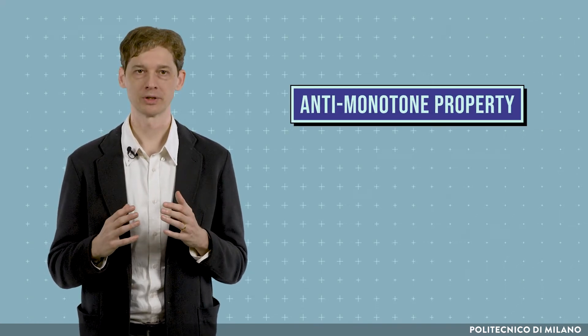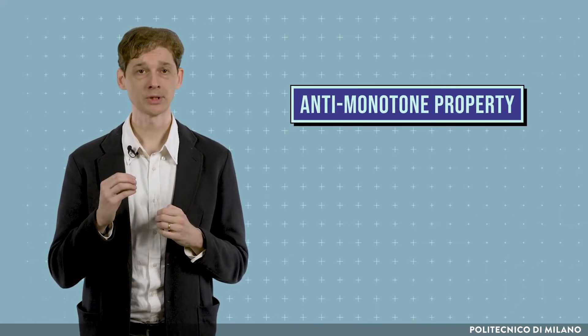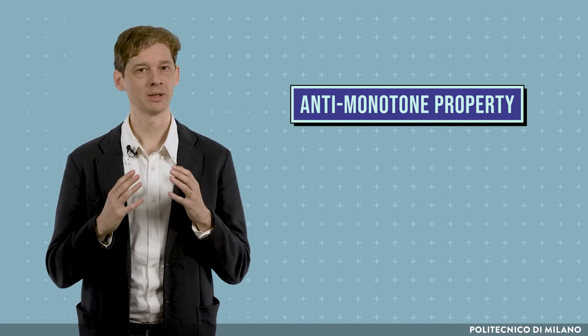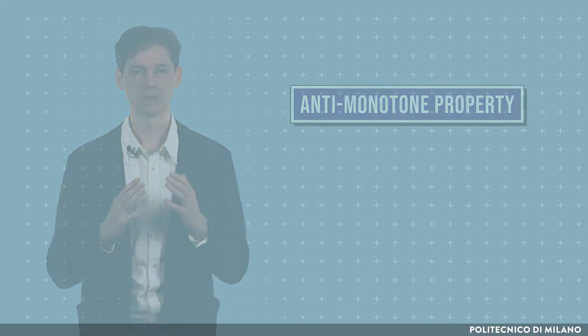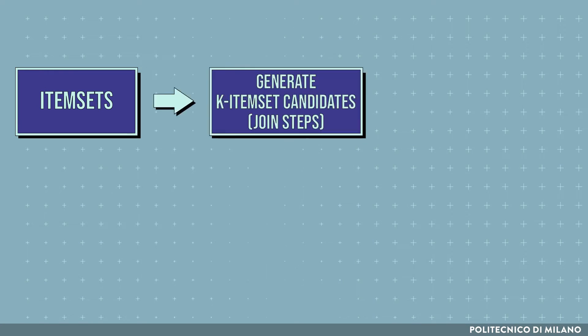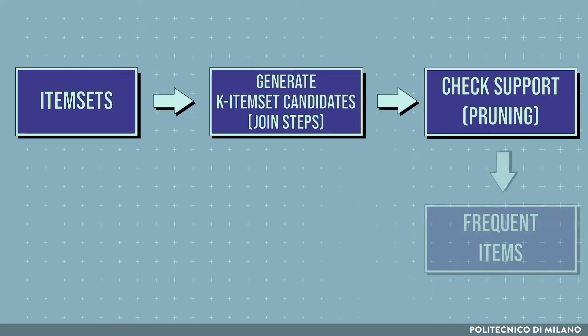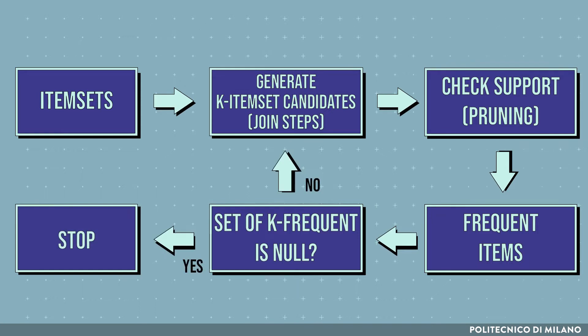To improve the efficiency of the generation of frequent item sets, Apriori exploits the anti-monotone property, which helps to reduce the search space. According to the anti-monotone property, all subsets of a frequent item set must be frequent, and if an item set is infrequent, all its supersets will be infrequent.